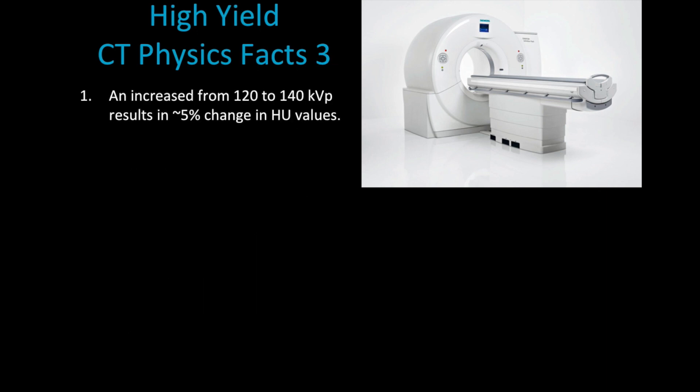For high yield facts, I wanted to mention that an increase from 120 to 140 kVp will only change about 5% of the Hounsfield values. There will be a 5% difference from the two studies. The two main points from this fact are that my Hounsfield unit values are dependent upon my kVp, and the second point is that although they're dependent upon kVp, a change in kVp does not really signify a very big change in Hounsfield units.